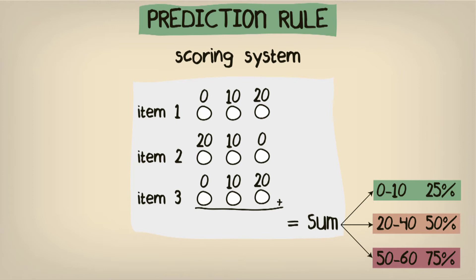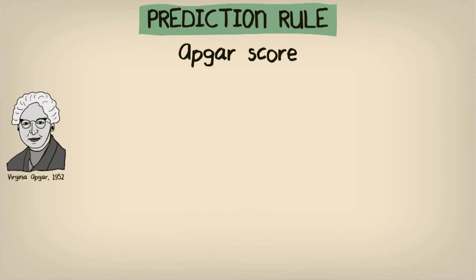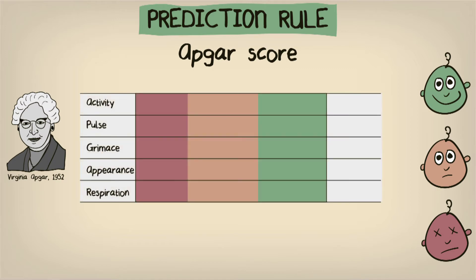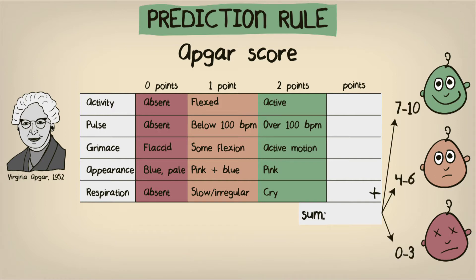Perhaps the most famous example of such a score is the APGAR score. Developed by Virginia Apgar in 1952, the APGAR score is used to decide the health status of newborn babies and in turn make implicit prognostic predictions. The score consists of five components, each relating to a characteristic of the newborn child. For each characteristic, a newborn child can score 0, 1, or 2 points depending on the strength of the observed characteristic. The scores over the five categories can then be combined as a total score, which can be used to classify newborn children into low- to high-risk categories to help decide whether a child needs immediate medical attention.